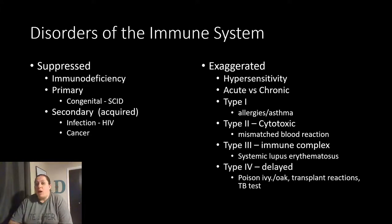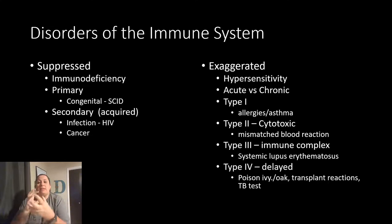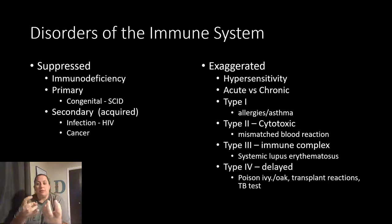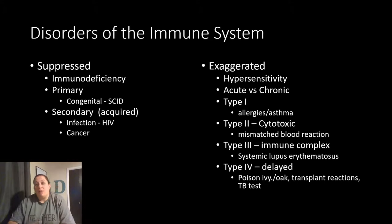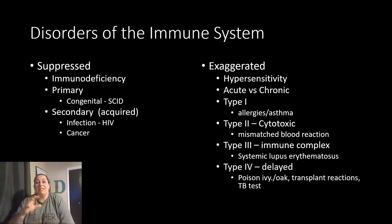Type 3 is an immune complex issue where the immune system attacks something and makes complexes that, instead of being dissolved and eliminated, start to build up in organs — triggering your immune system to fight more because it causes inflammation. A lot of type 3 cases are autoimmune disorders where the immune system attacks itself. We call that autoimmunity. One of the best examples is systemic lupus erythematosus.